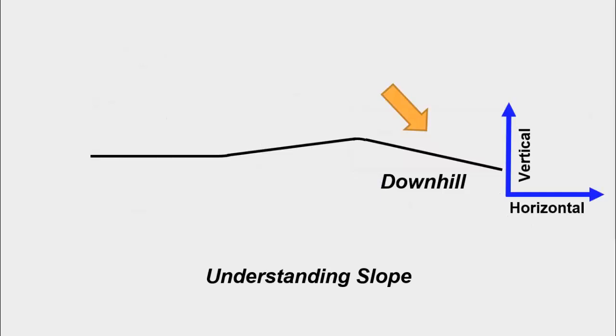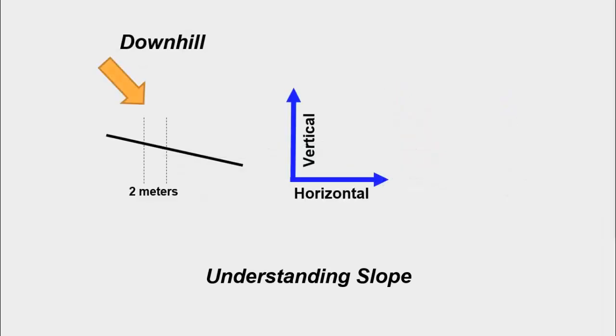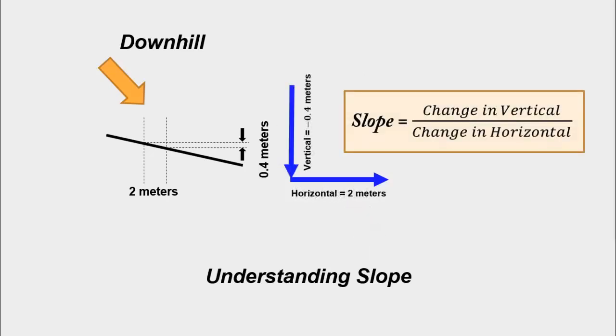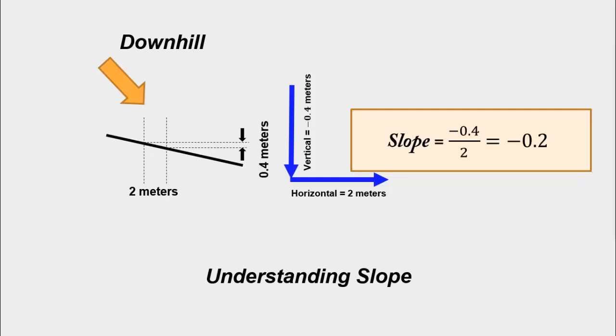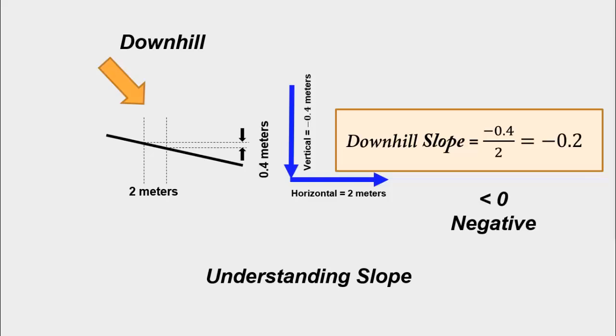And finally, if you look at the downhill road, pick a region. The vertical change is now in this direction, or the vertical change is now negative. So let's just plug in the numbers. Slope is now negative 0.4 divided by 2, and that is negative 0.2. So a downhill slope is always less than 0, or negative.